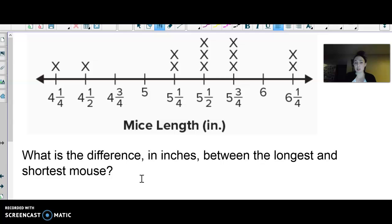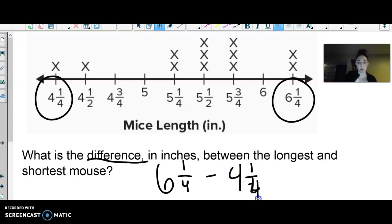What is the difference in inches between the longest and shortest mouse? Go ahead and figure it out. Alright, hope you got it. The longest one is six and one fourth inches. There's two of them really that were tied for that. The shortest was four and one fourth. Difference means I'm going to subtract. So six and one fourth minus four and one fourth is two inches. So they were two inches different in length. That's all for this one. If you need help understanding, make sure you ask. Good luck.